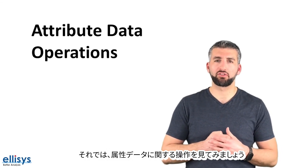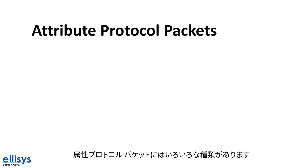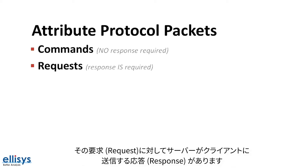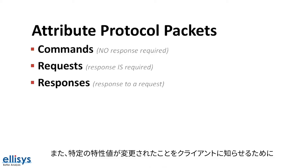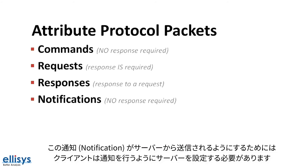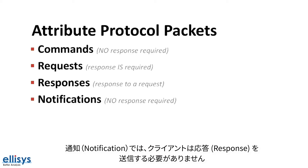Let's look at the different types of attribute data operations. There are different types of Attribute Protocol packets. They include commands, which are sent by the client to the server; requests, which are also sent by the client to the server but require a response; and responses, which are sent by the server in response to a request. We also have notifications, which are sent by the server to the client to let the client know that a specific characteristic value has changed. In order for notifications to be triggered, the client has to enable notifications for that specific characteristic of interest.